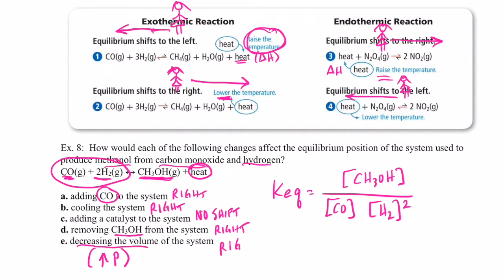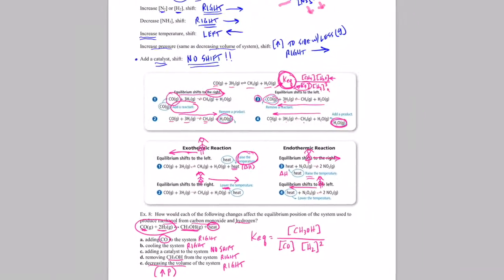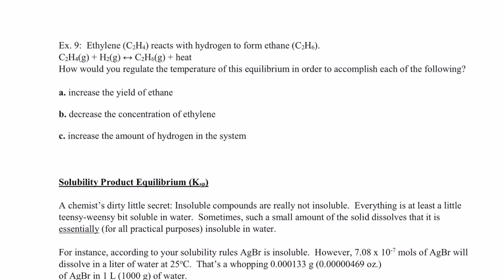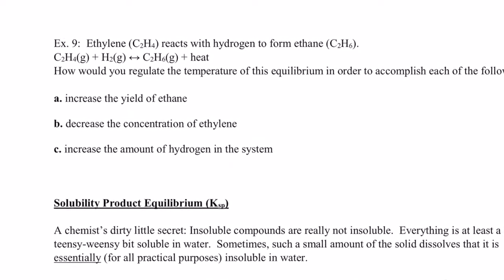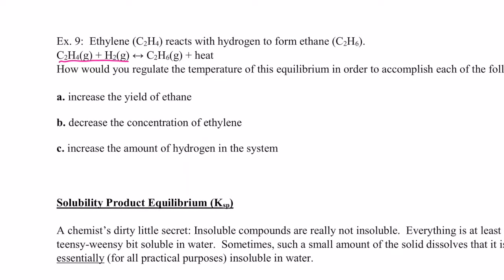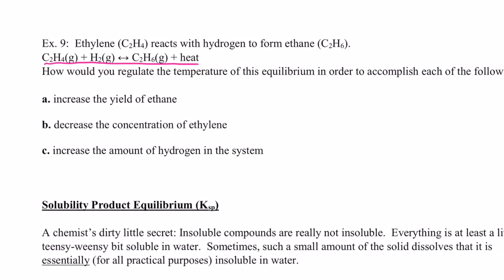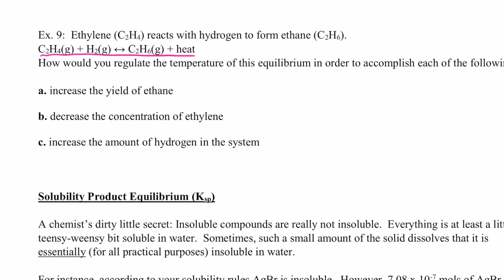Now let's see if you can do one by yourself. Example nine: ethylene reacting with hydrogen to form ethane — an exothermic reaction. How would you regulate the temperature to accomplish each of the following? Go ahead and try parts a, b, and c without my help, then return to the video.